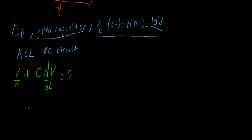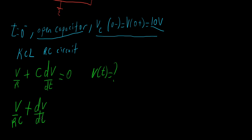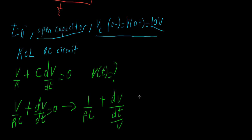We need to solve this because we need to get the voltage with respect to time. We rearrange to get V over RC plus dV/dt equals 0, moving terms step by step. This gives us 1 over RC plus dV, and we put V with V here, so we get 1 over RC — and this equals 0.